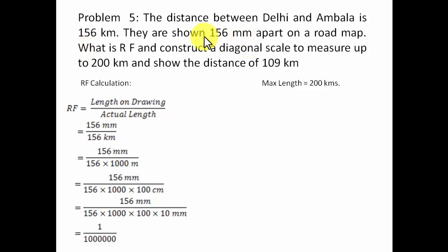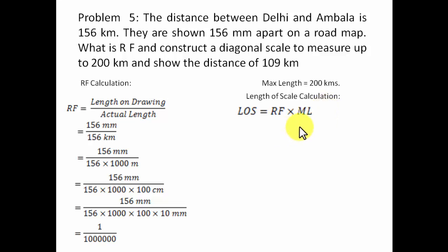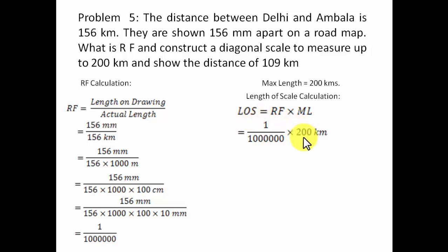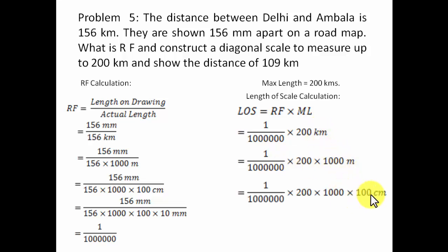The scale should be good enough to measure up to 200 kilometers, so the maximum length is 200 kilometers. The length of scale is given by: RF multiplied by maximum length. Putting in the values — RF is 1/10^6 and maximum length is 200 kilometers — and converting through kilometers to meters to centimeters, after cancelling all the zeros we get 20 centimeters as the length of scale.